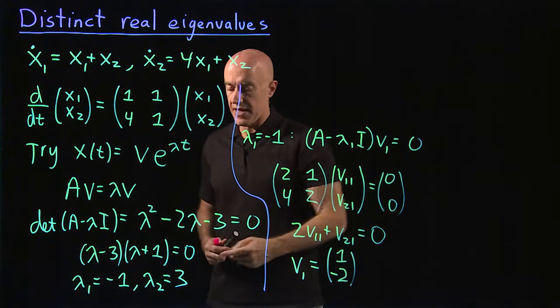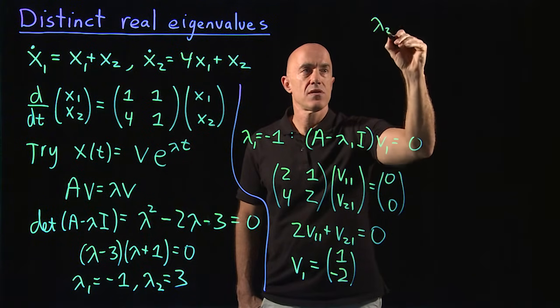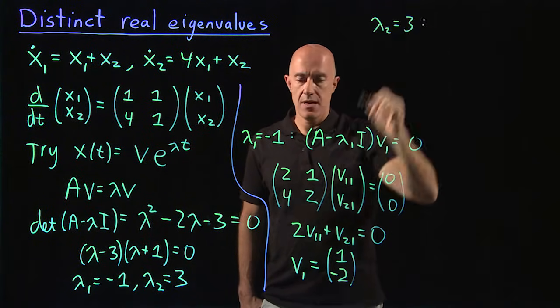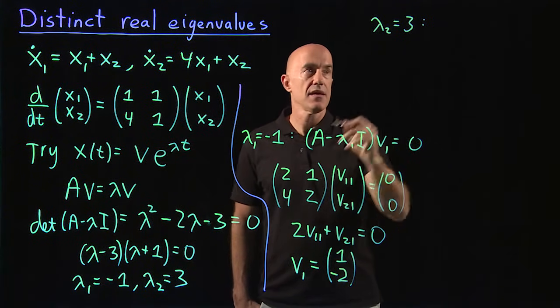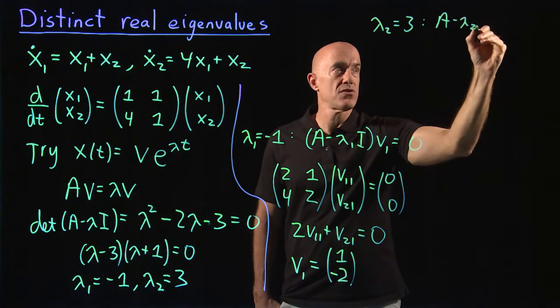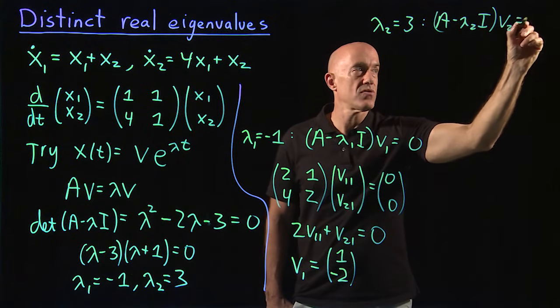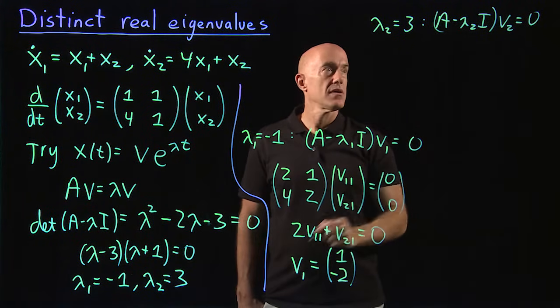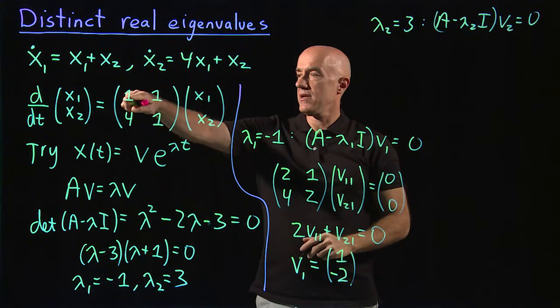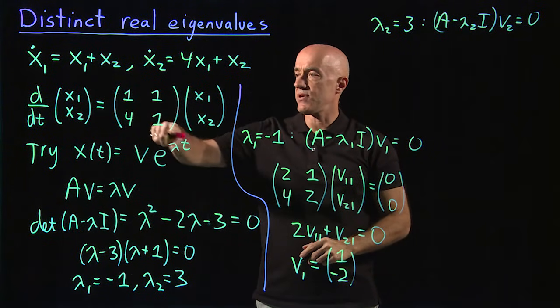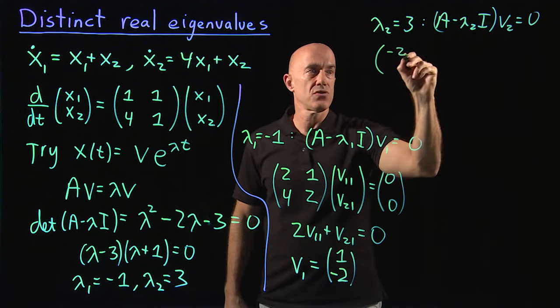Then we try to find the second eigenvector. So lambda 2 is equal to 3, and then we have this equation again: A minus lambda 2 I times v₂ equals 0. We need to now subtract 3 from the diagonal element. So from looking at the matrix, 1 minus 3 is minus 2, 1.